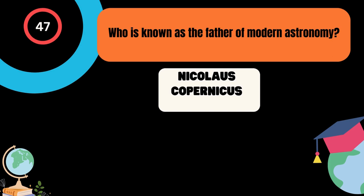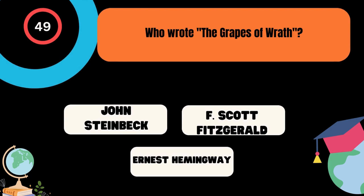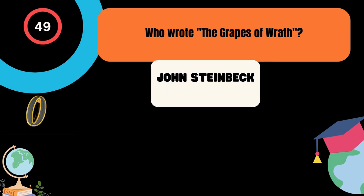What is the capital of South Korea? A. Tokyo, B. Pyongyang, C. Seoul. And the correct answer is Seoul. Who wrote The Grapes of Wrath? A. John Steinbeck, B. F. Scott Fitzgerald, C. Ernest Hemingway. And the correct answer is John Steinbeck.